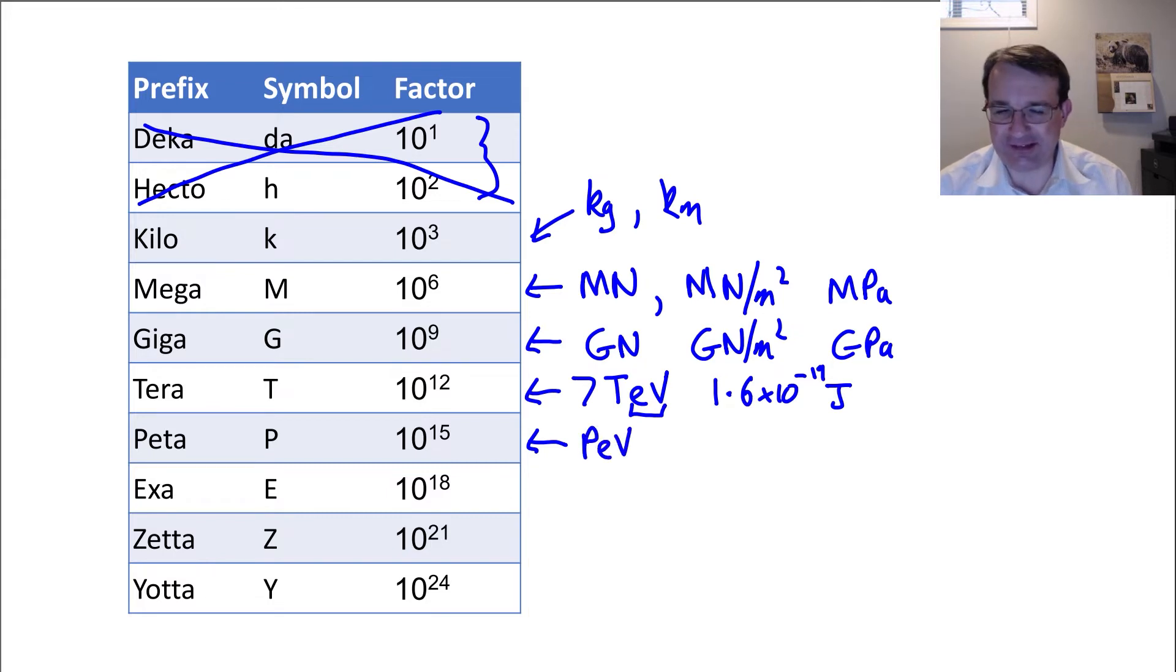If you work on IceCube, then we have neutrinos which have peta electron volt energies. This is about a thousand times higher in energy than the Large Hadron Collider. Unfortunately we can't collide the neutrinos of that energy together because they're pretty rare - they're produced from astrophysical sources that are not even in our galaxy, or at least the evidence we have so far suggests that. These are insanely high energy particles. 10 to the 15 is peta, and we multiply this by 10 to the minus 19, so these are subatomic particles with about a tenth of a millijoule of energy, which is ridiculously high given the tiny size of the particle.